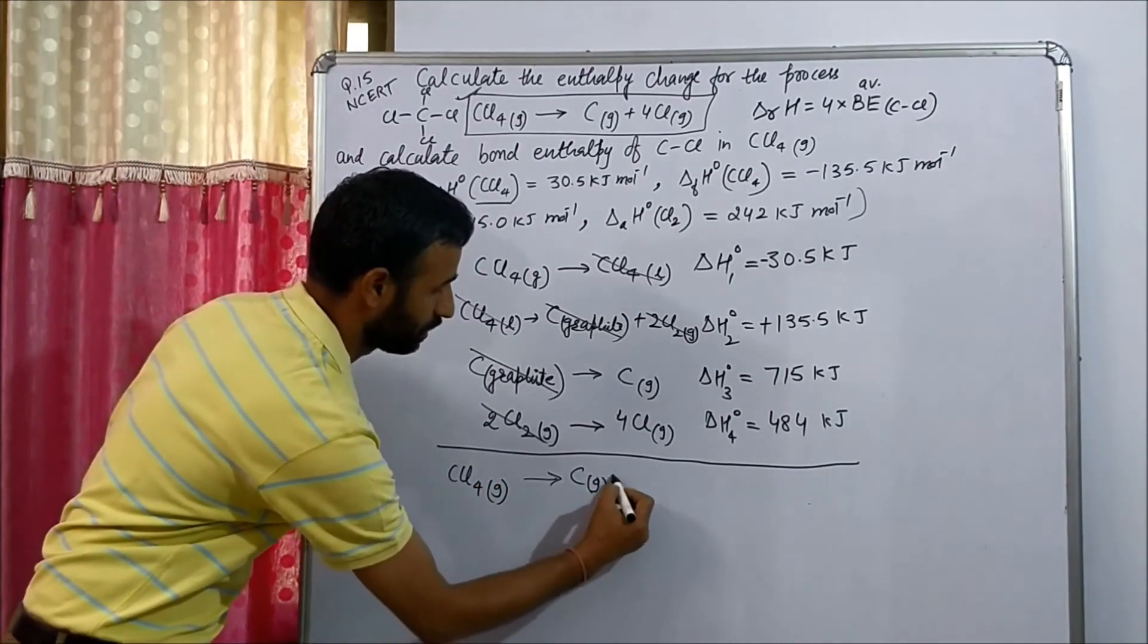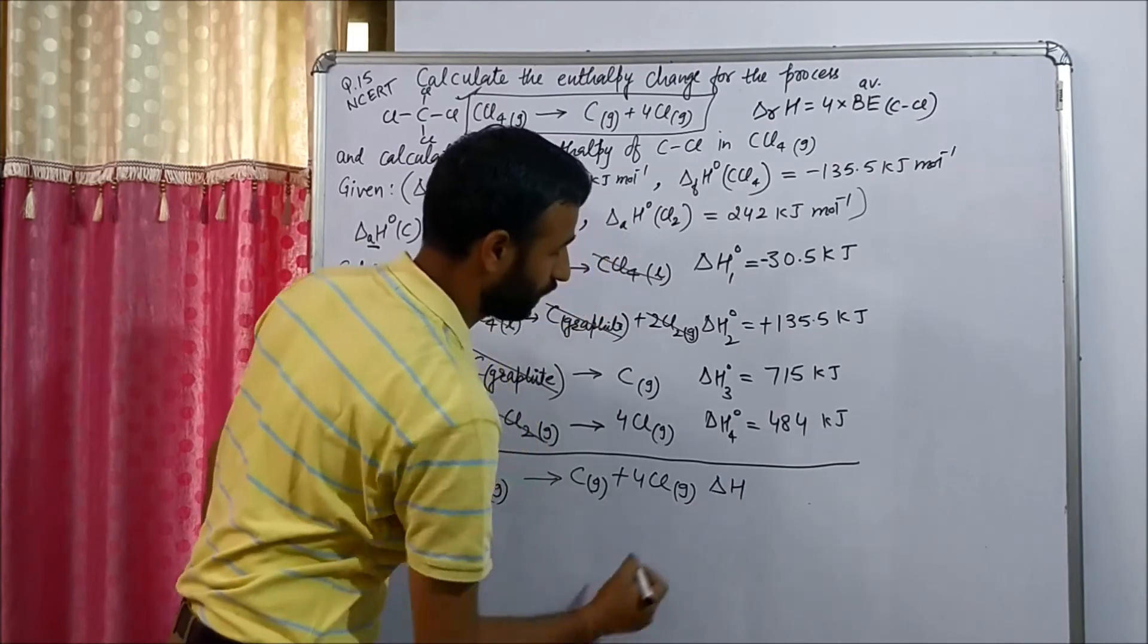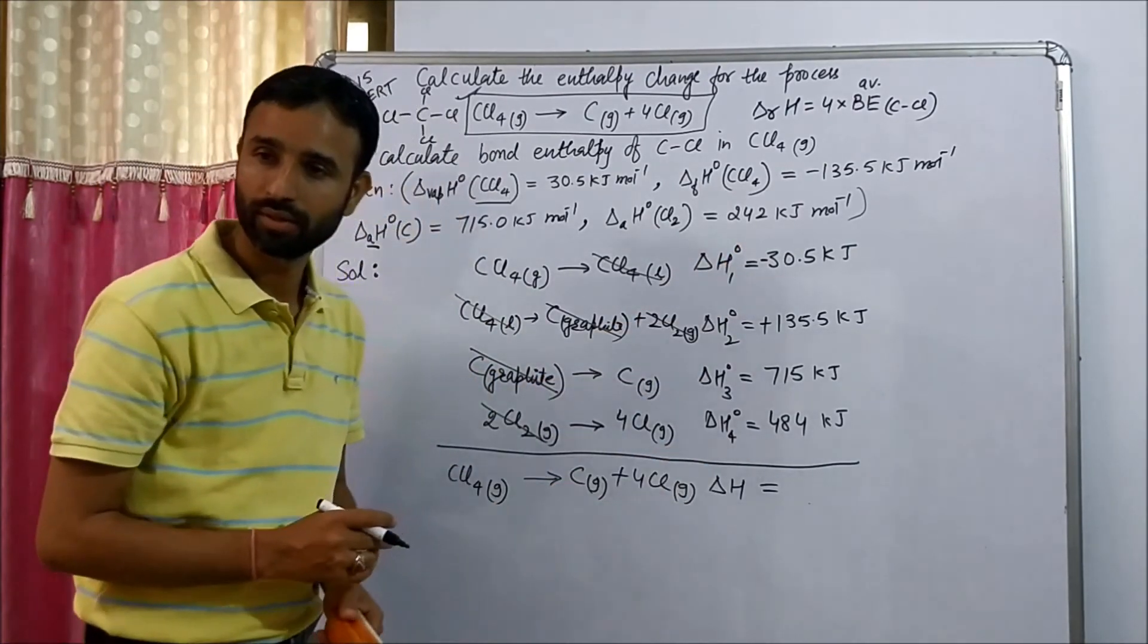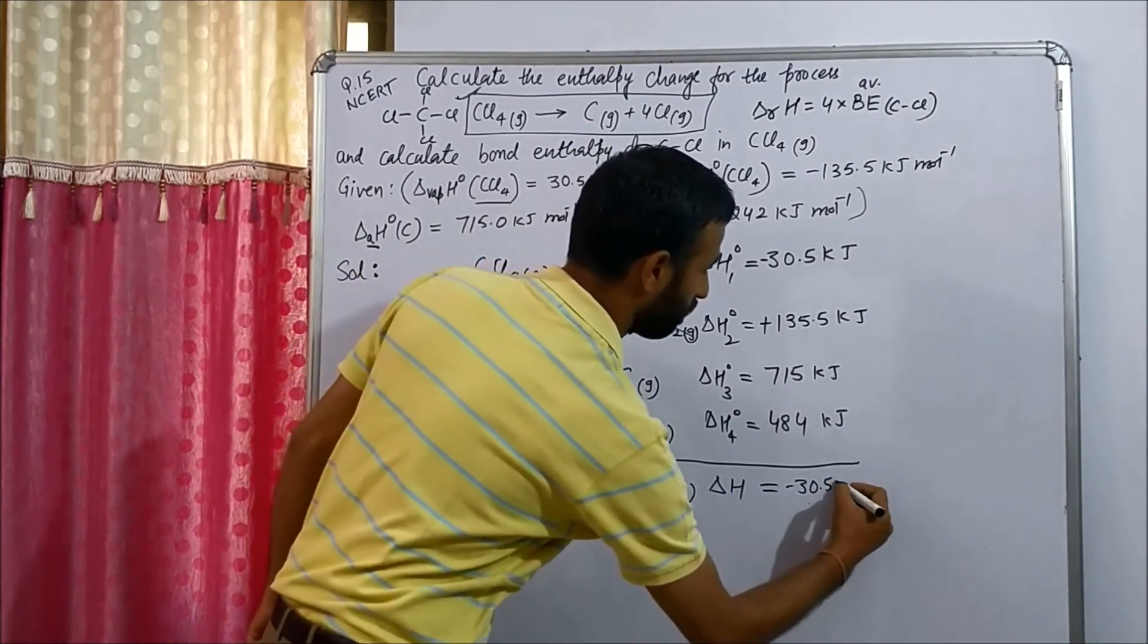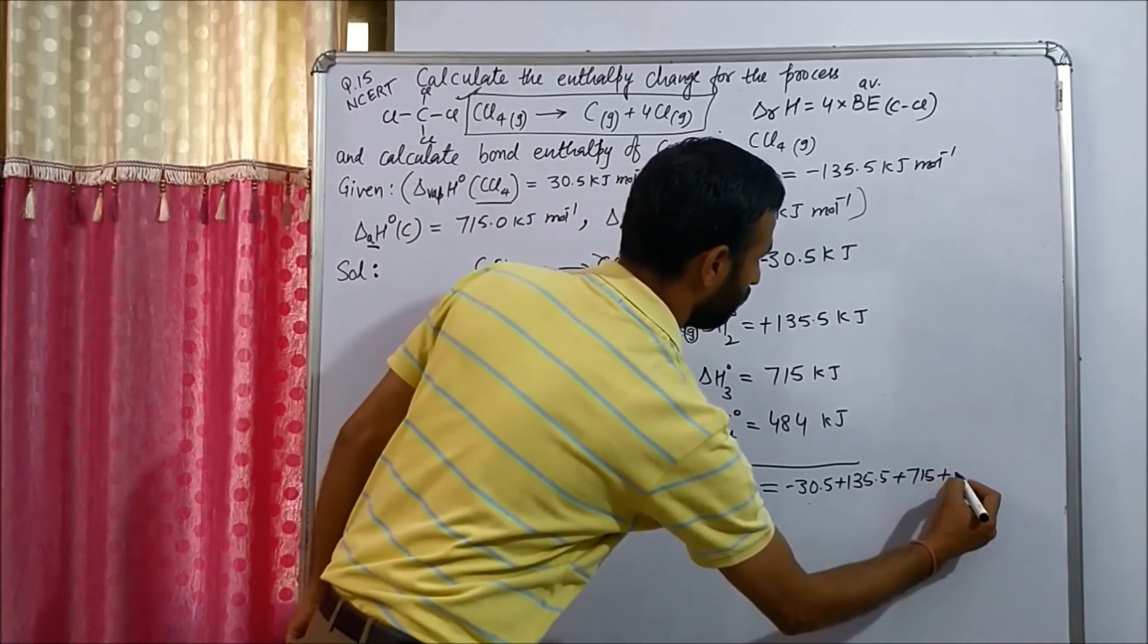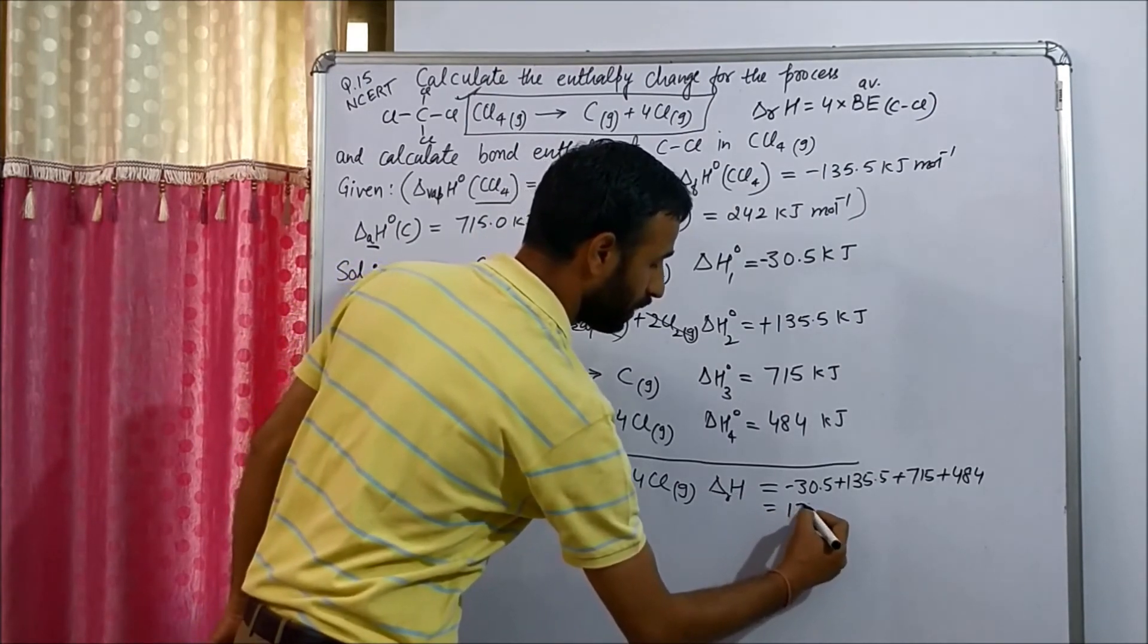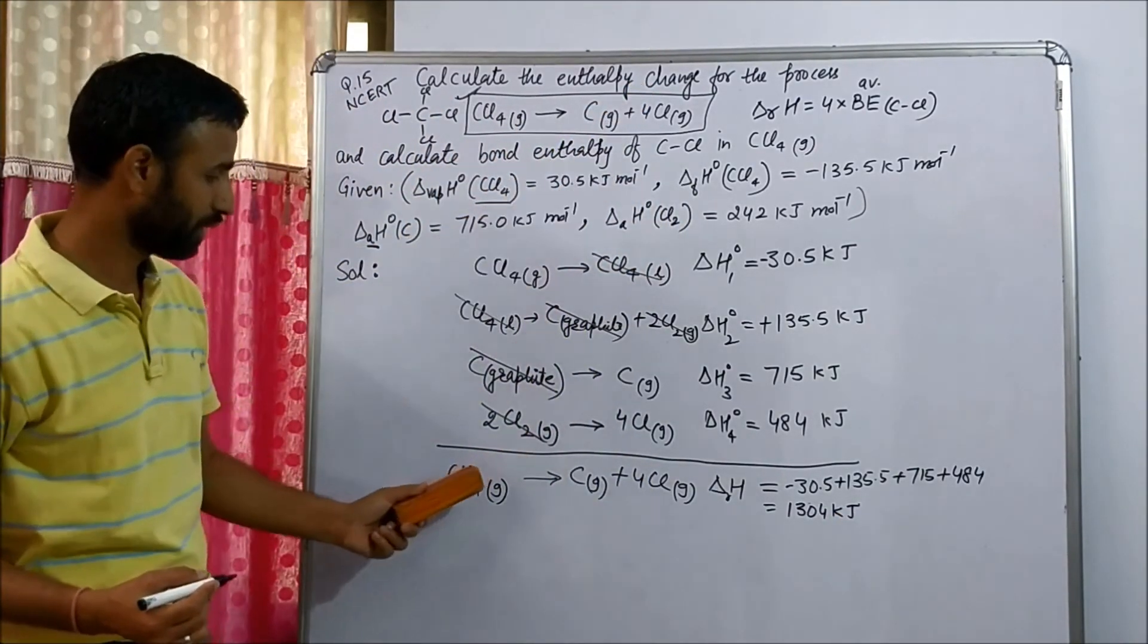So what is left? Carbon gas plus four Cl gas. Now enthalpy of this equation, as we add these four equations, we have to add enthalpy. So it is minus 30.5 plus 135.5 plus 715 plus 484. So what is the value? 1304 kilojoules.